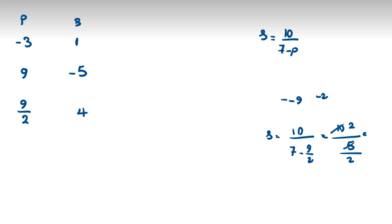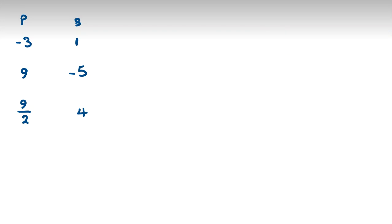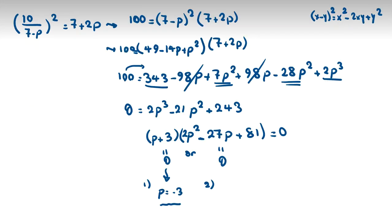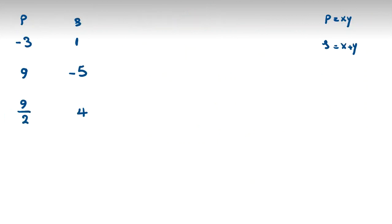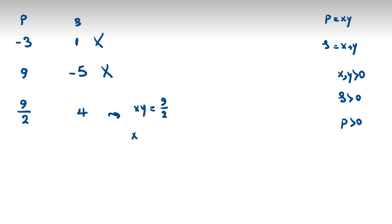Now in each case, x times y equals p and x plus y equals s. We know that x is 2 to the a and y is 3 to the b, so both must be positive. Therefore s and p must both be positive. So the case p equals negative 3 is invalid, p equals 9 gives s equals negative 5 which is also invalid. We must take only the case p equals 9 over 2 and s equals 4.